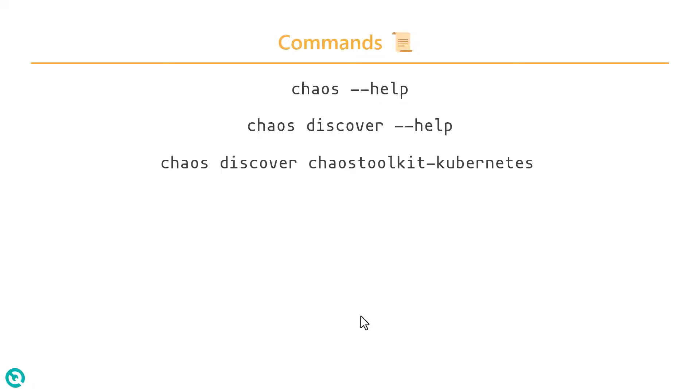For example, chaos discover chaos-toolkit-hyphen-kubernetes will help you download the experiments and capabilities for Kubernetes. Next is chaos init, which is the inception command you will execute to initiate your Kaya's experiment.